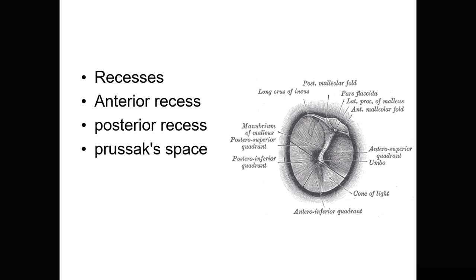Some recesses are related to the tympanic membrane. The anterior recess is present between the anterior malleolar fold and the handle of the malleus, containing the chorda tympani nerve. The posterior recess lies between the posterior malleolar fold and the handle of the malleus, also containing the chorda tympani nerve. Prussak's space is a mucous recess lying above the lateral process of the malleus, between the neck of the malleus and the pars flaccida of the tympanic membrane.